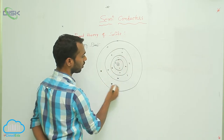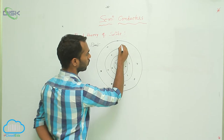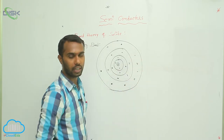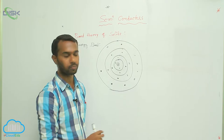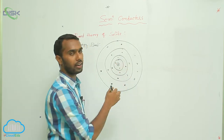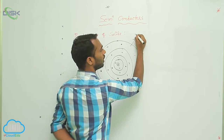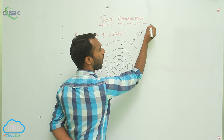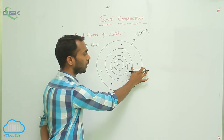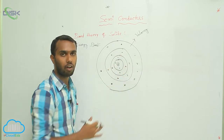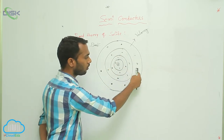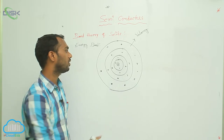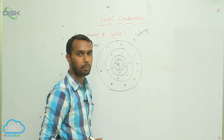These are the electrons revolving in the orbitals. The last orbital in this atom is called the valency orbital. The electrons present in the valency orbital are called valency electrons because they are present in the valency band.